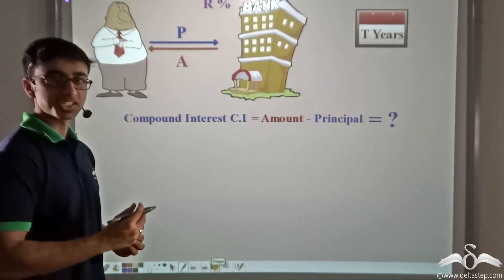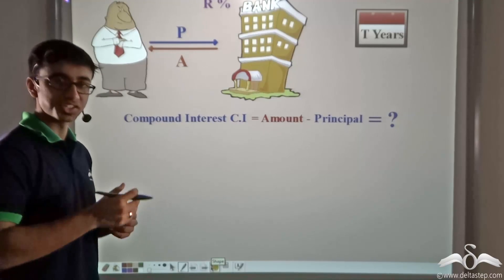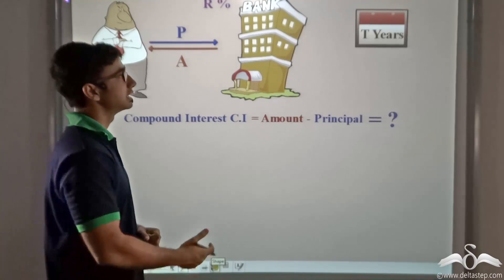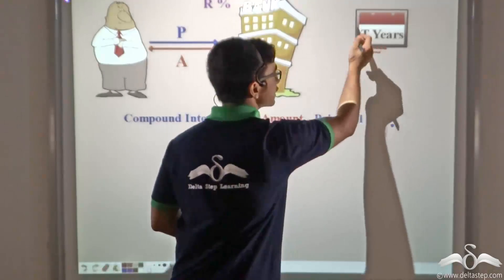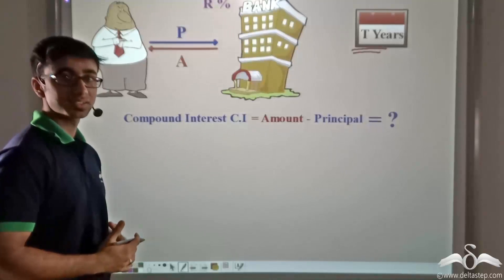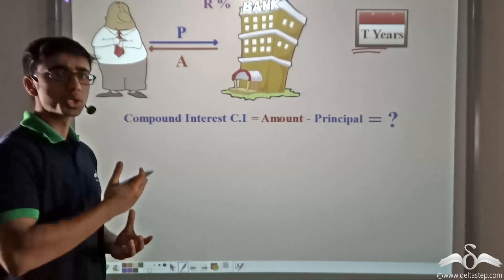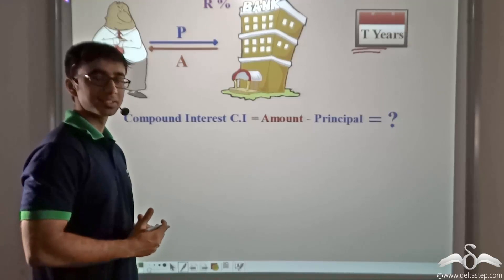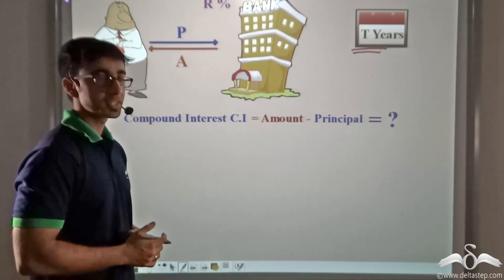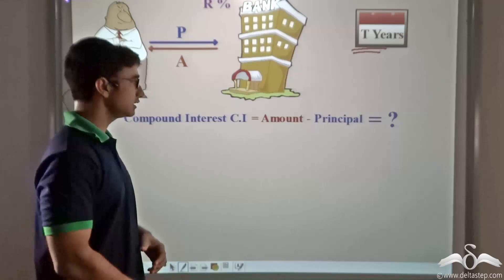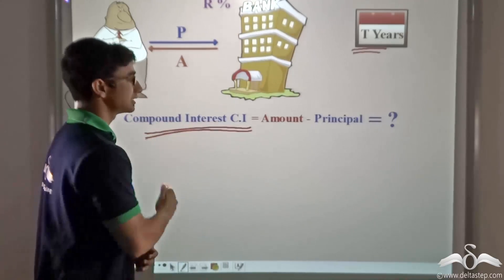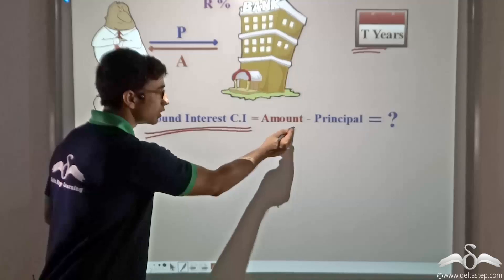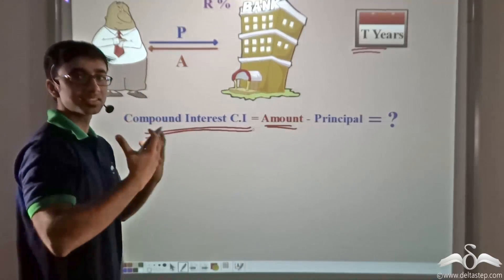Obviously, calculating every year's interest and amount separately is quite tedious. What if instead of 3 years the number of years was greater — let's say 7 years? Would you calculate the interest for every year individually? That is quite a tedious job. So let us see how we can generalize the formula and come up with a formula for compound interest and the amount generated.